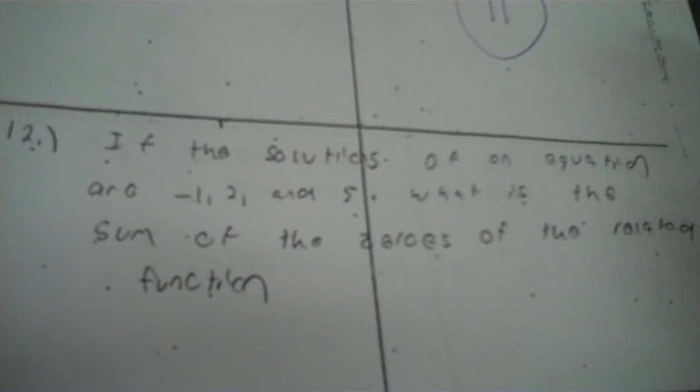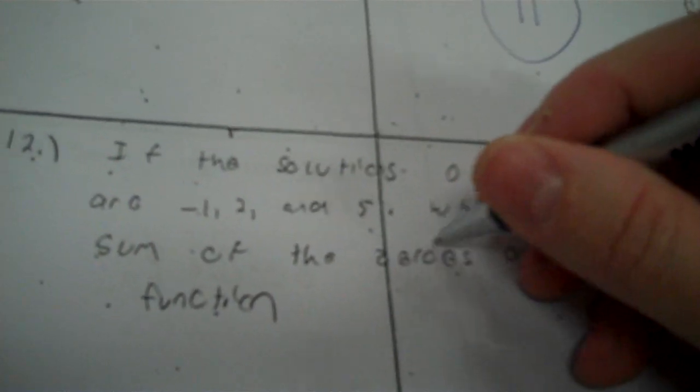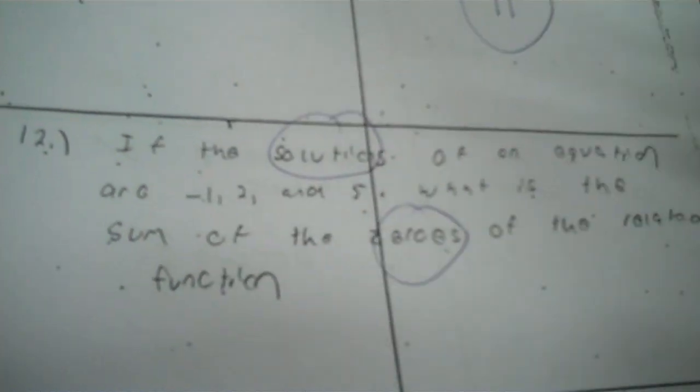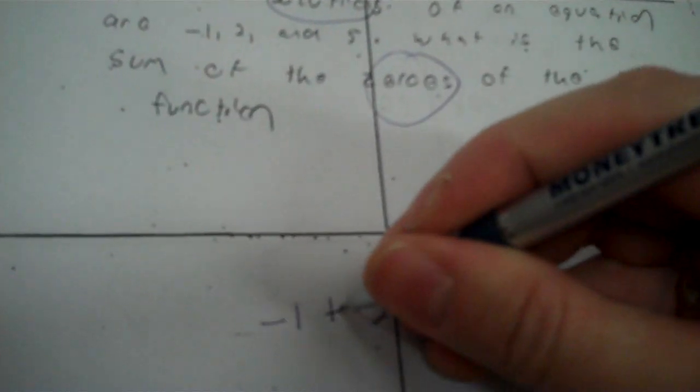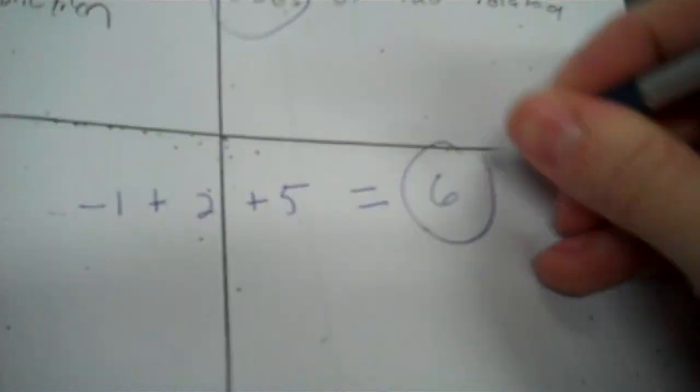If the solutions of an equation are negative 1, 2, and 5, what's the sum of the zeros of the related function? The solutions are the zeros — they mean the same thing. Solutions, roots, zeros, whatever. They told me what they were: negative 1, 2, and 5. The sum of them is just adding them together: negative 1 plus 2 plus 5 equals 6.